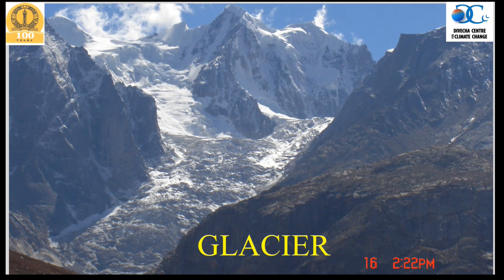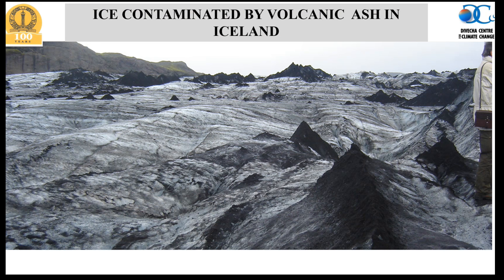Sometimes there is significant contamination onto glacier ice. For example, when volcanic activity takes place in Iceland, a large amount of ash is deposited on the snow and ice, creating very different colors. This can significantly enhance melting of glaciers because of the reduction in ice albedo. Glaciers can have very different characteristics and albedo, which changes their melting behavior.